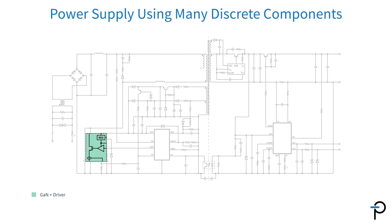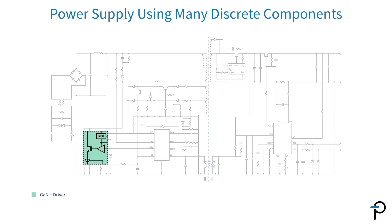I've highlighted the external switch, the GaN and the driver device. That's the main high voltage power switch that's responsible for executing the switch mode power supply function that ultimately transmits the energy across the transformer.